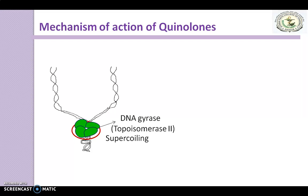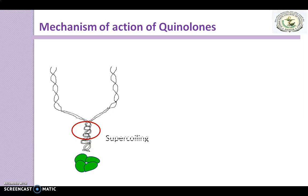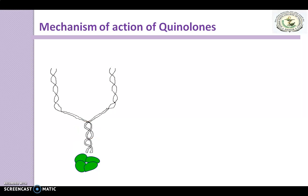DNA gyrase is an essential bacterial enzyme composed of 2A and 2B subunits, products of the GYRA and GYRB genes. Topoisomerase 2 is responsible for removing the positive superhelical twist so that DNA replication can proceed. DNA gyrase removes this supercoiling, allowing replication to continue.